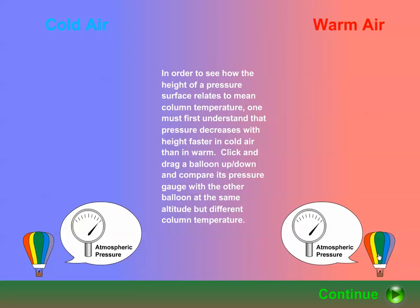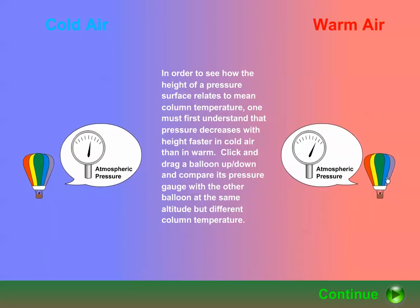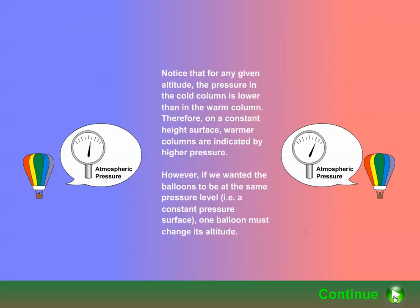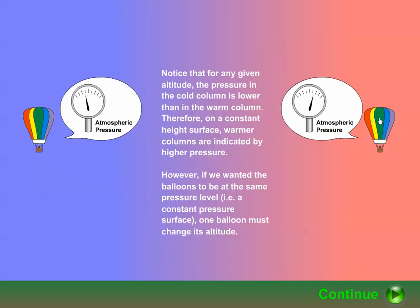As the balloons rise, pressure decreases — we can see the pressure readings on their gauges decrease. But if we check our pressure gauge on the balloon in the cold air column, we find that it reads lower than that in the balloon in the warm column. That's true regardless of altitude, because a cold air column tends to be deflated vertically compared to a warm air column.